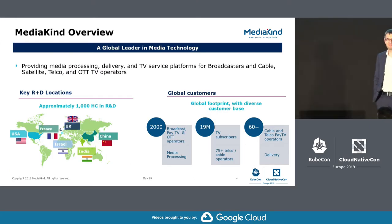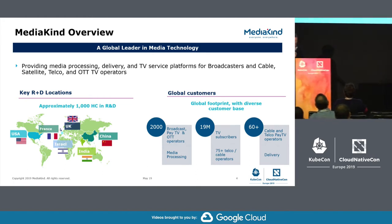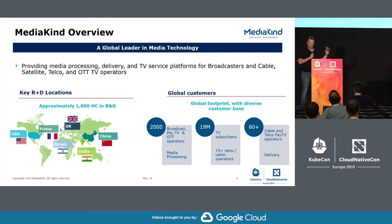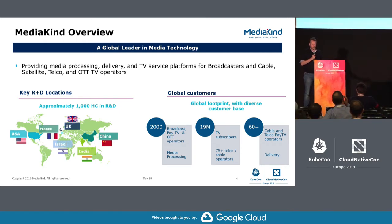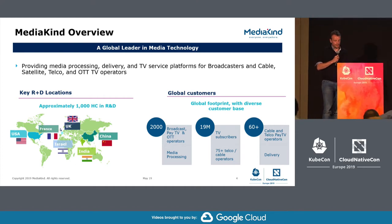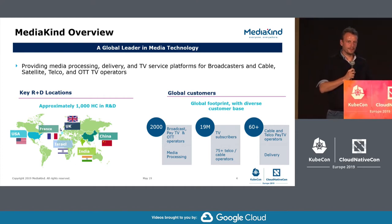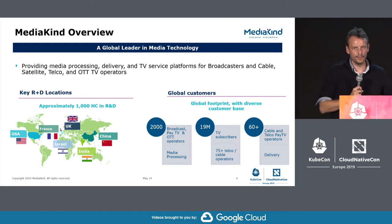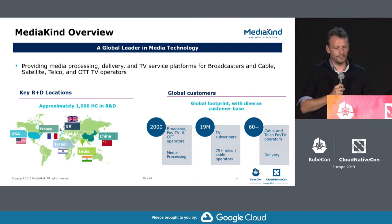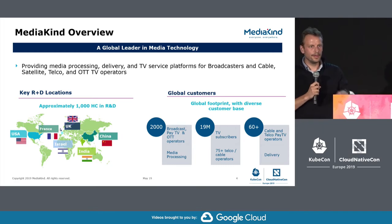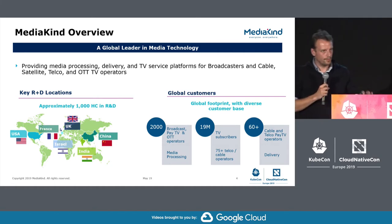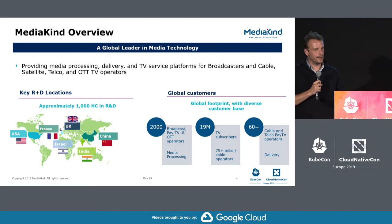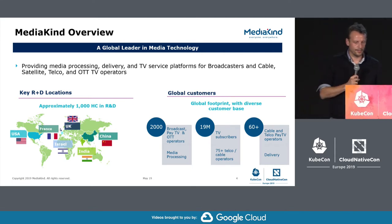MediaKind is a global leader company in the media space with a large focus on R&D across multiple locations globally. We are hiring, by the way. Our customers are mostly network TV services operators — everyone doing TV in the world today. In summary, if you watch live TV, sports, on-demand, or OTT, there's a very big chance that the video feeds and data feeds have been through MediaKind software or hardware at some point.